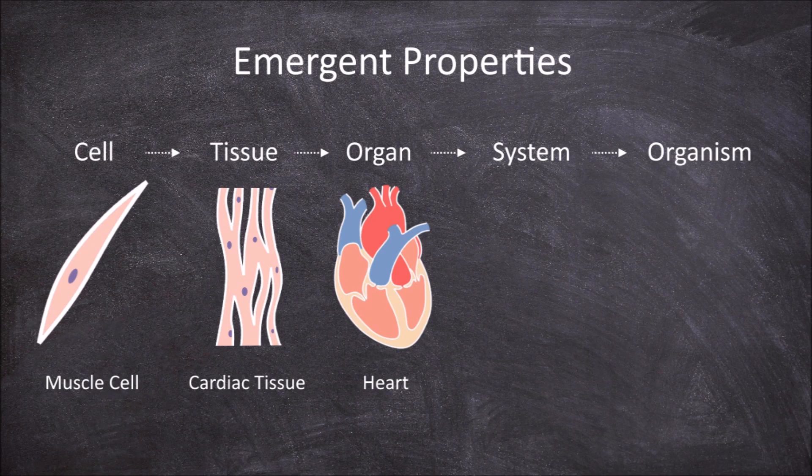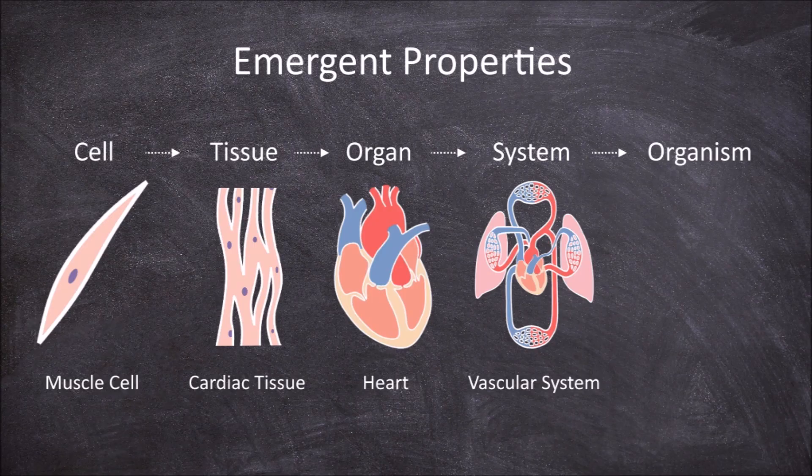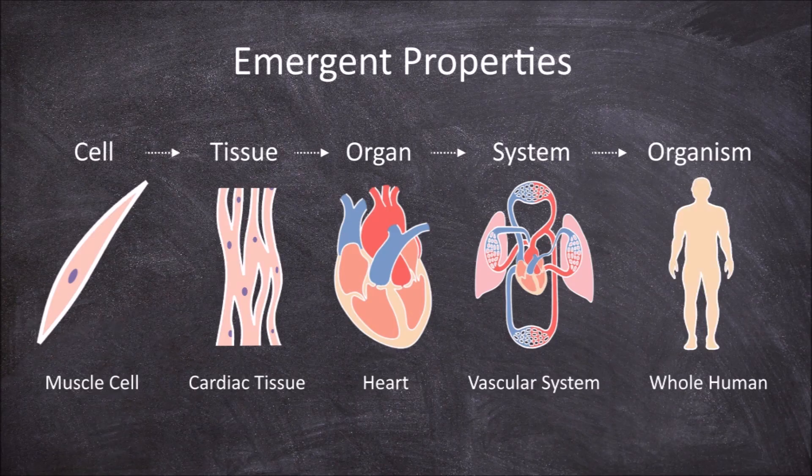At the system level we have the vascular system, which is the heart as well as the arteries and veins. The system is able to transport the blood throughout the body. At the organism level we have the whole human, where the whole body is able to use this blood to perform the functions required for life.